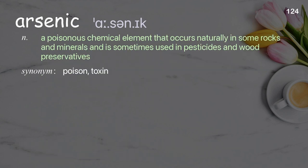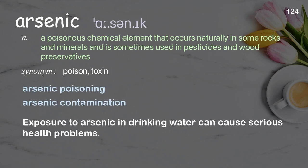Arsenic: a poisonous chemical element that occurs naturally in some rocks and minerals and is sometimes used in pesticides and wood preservatives. Examples: arsenic poisoning, arsenic contamination. Exposure to arsenic in drinking water can cause serious health problems.